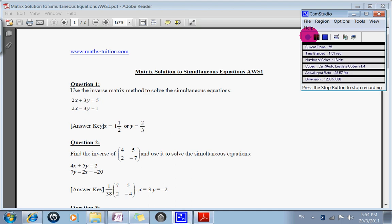We are going to solve simultaneous equations by the matrix method. Let's look at this question. Use the inverse matrix method to solve the equation 2x plus 3y equals 5, 2x minus 3y equals 1.